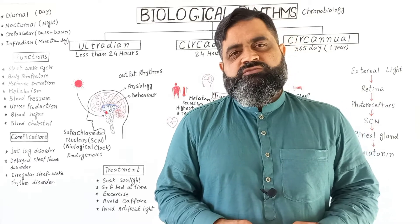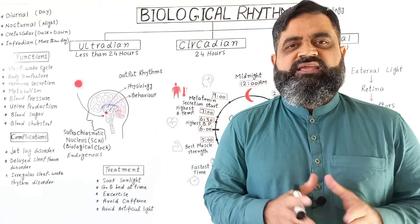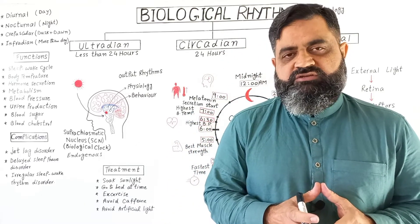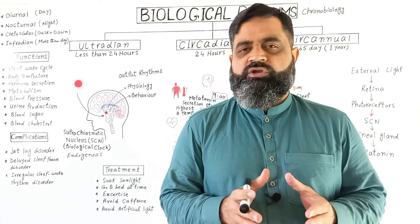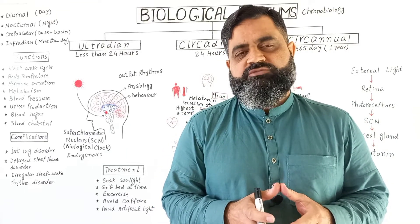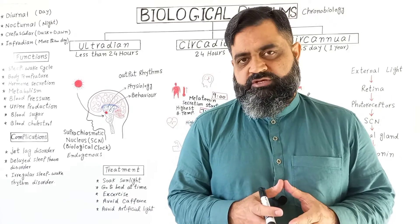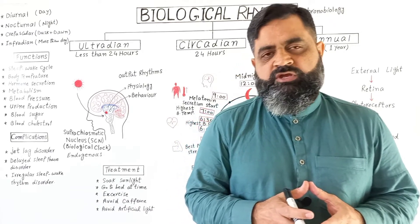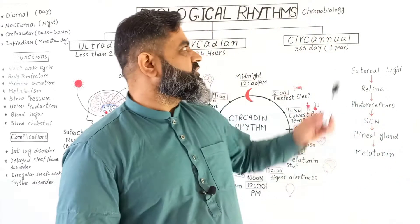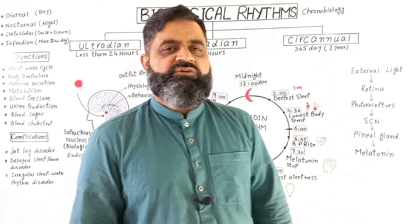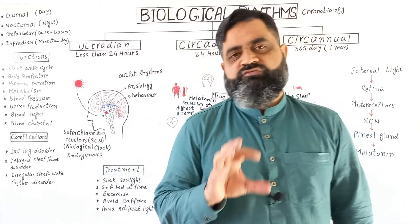Biological rhythms are specialized rhythms or cyclic activities which occur in all living organisms including microorganisms, fungi, plants, animals and human beings. There is a branch of biology known as chronobiology in which we study these types of rhythms.